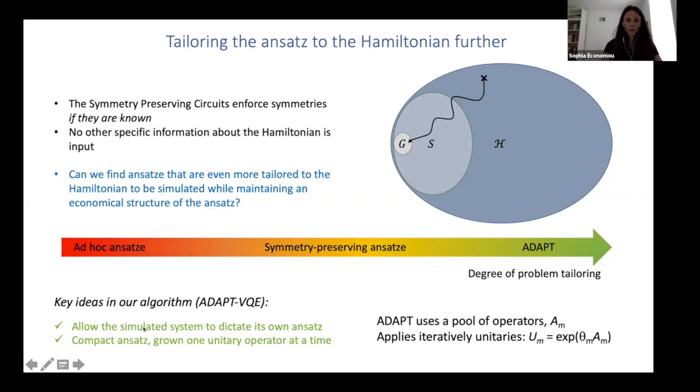So the key ideas here is that we want the system to be simulated to dictate its own ansatz. And we construct it in a way that it's compact, so it's iteratively grown one unitary operator at a time. And the key ingredient here of this algorithm is a pool of operators, which we call A. And each of these is exponentiated, and this is your unitary.